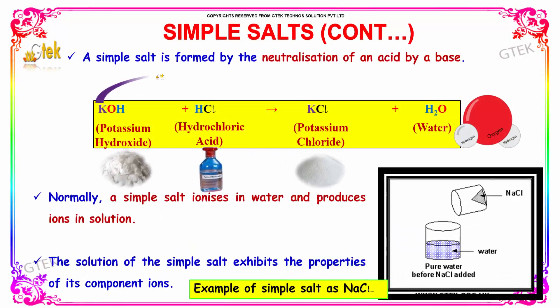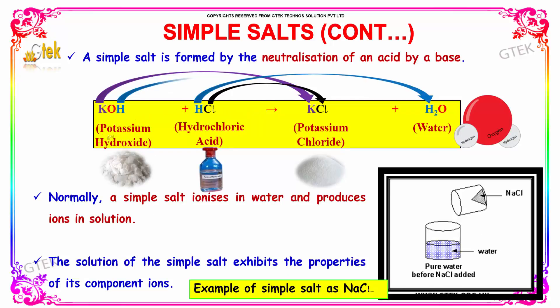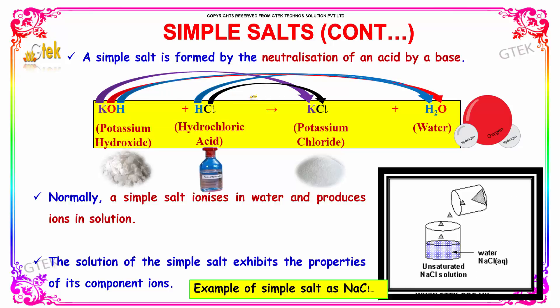A simple salt is formed by the neutralization of an acid by a base. You can see potassium hydroxide is the base. Mixed with hydrochloric acid, you'll get potassium chloride and water.